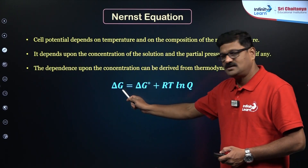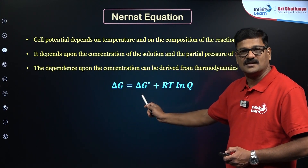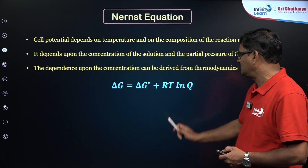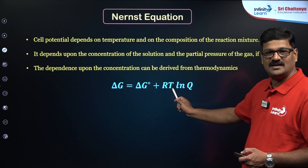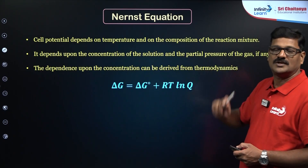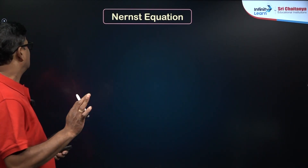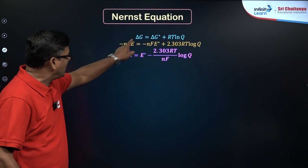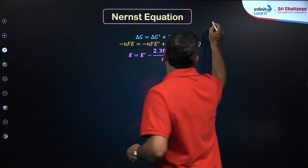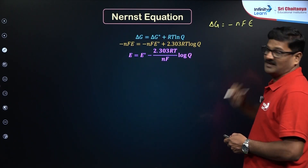Here, ΔG is the Gibbs free energy change, and ΔG° is the Gibbs free energy change at standard conditions. R is the gas constant, T is the temperature in Kelvin, and Q is the reaction quotient. The Nernst equation comes from ΔG = ΔG° + RT ln Q, and we know that ΔG = -nFE_cell.